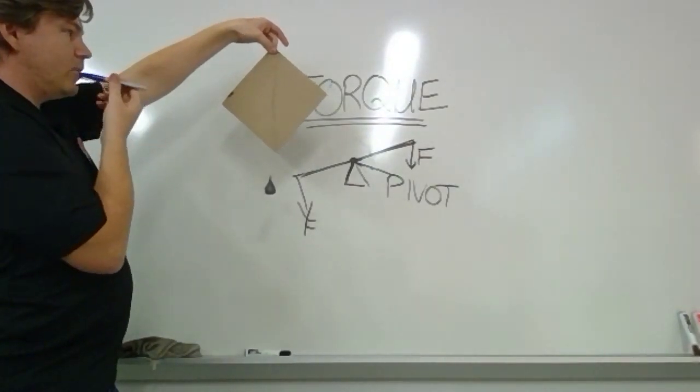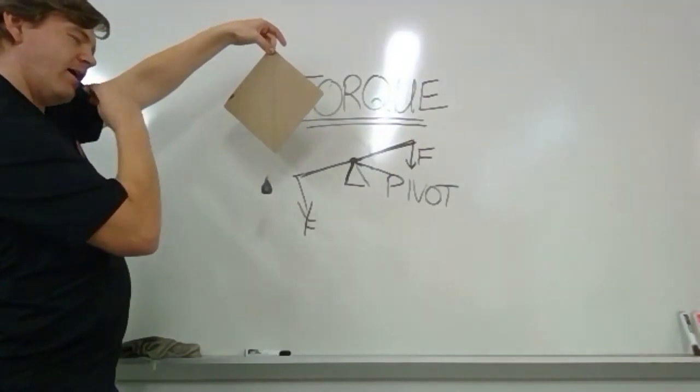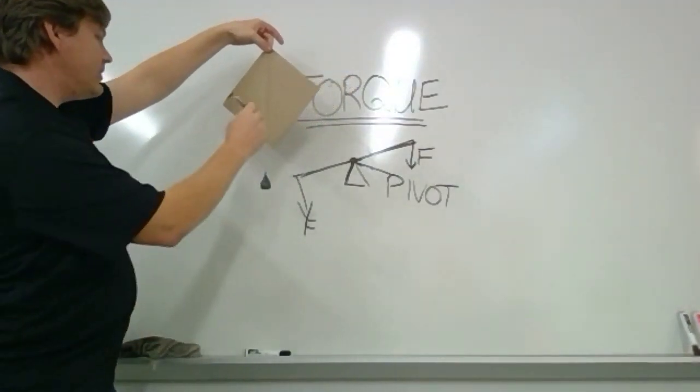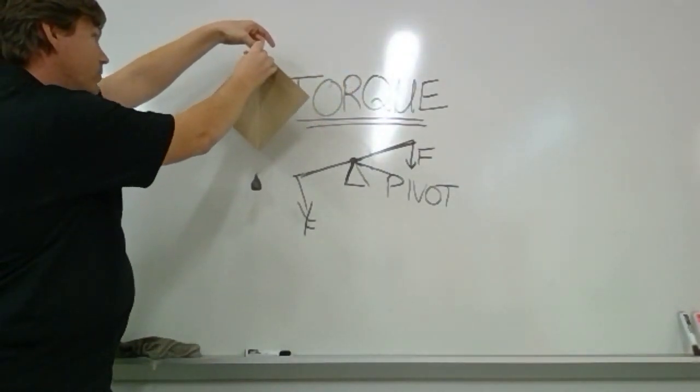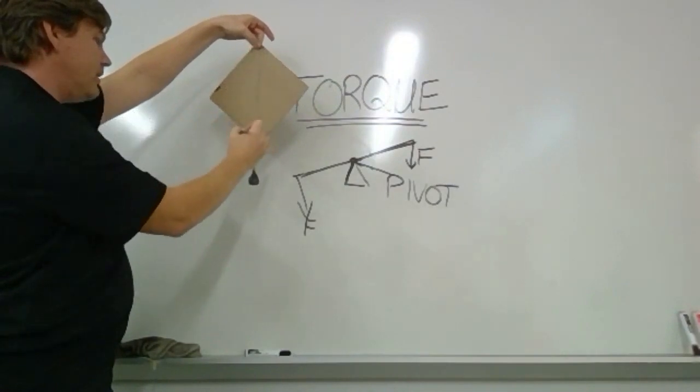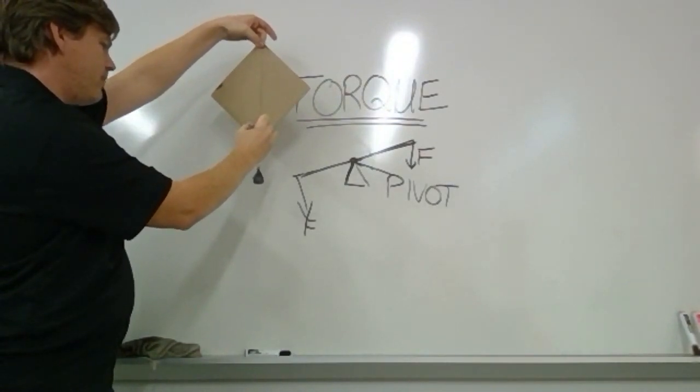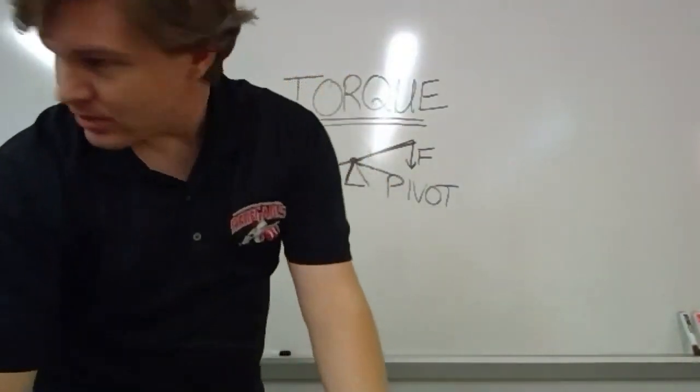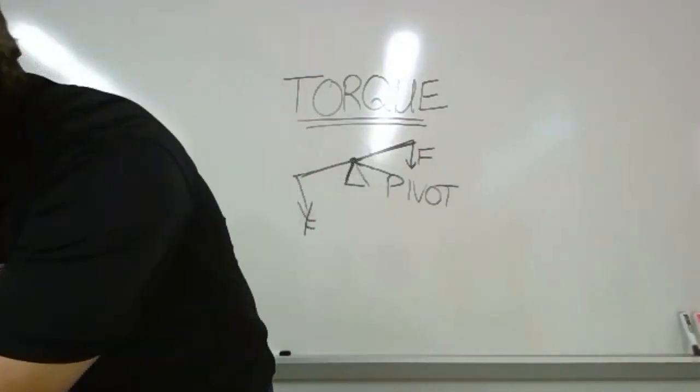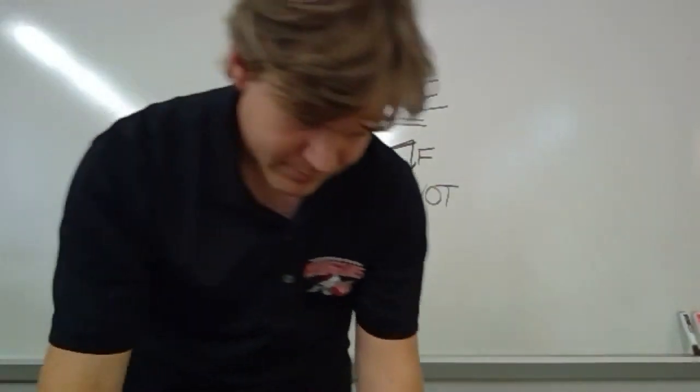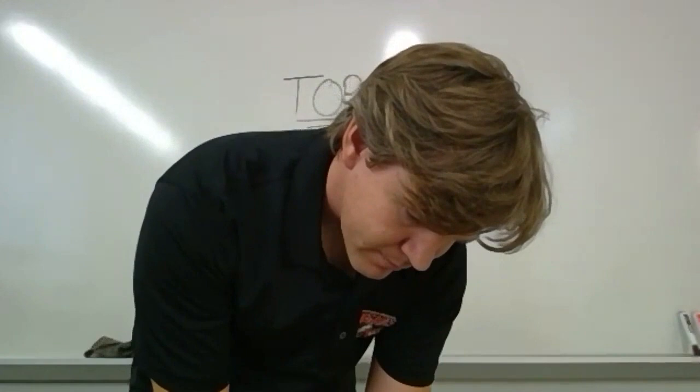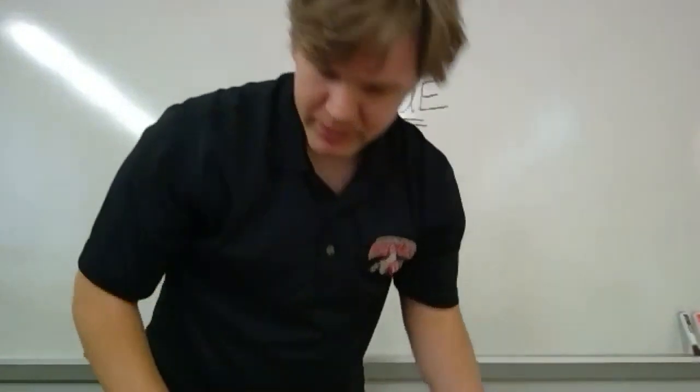And then what you do is mark two points of the line on the piece of cardboard. So a point there, a point there, a point there, and then you can draw a line. So let me just grab a straight edge here. And I'll draw that line for you. Step one complete.